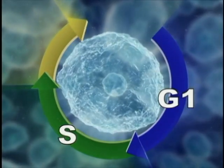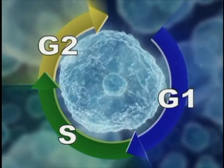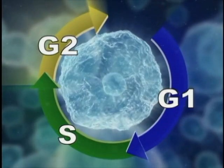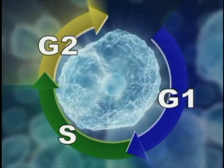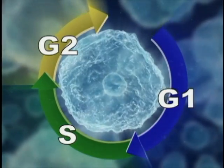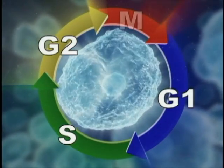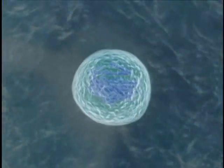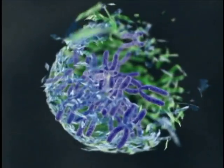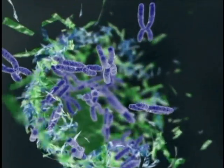After S phase comes G2. If the intracellular environment is favorable, and the DNA has been duplicated correctly, the cell progresses to the final phase, M phase. Here, the chromosomes condense and the nuclear envelope breaks down.